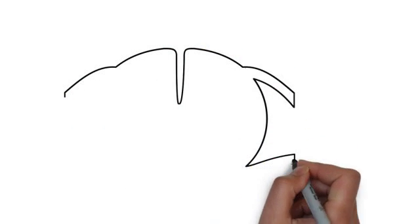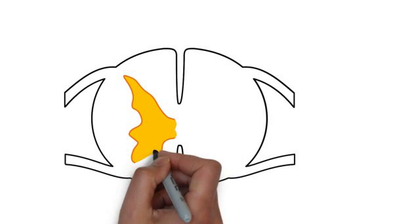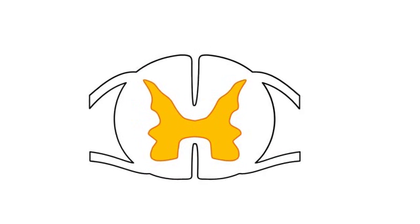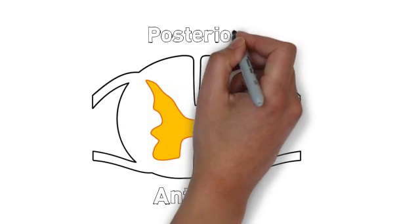I'll begin this review of the somatosensory system with the cross section of the spinal cord shown here, with the white matter in the outer portions and the gray matter colored gold in the center. Anterior is at the bottom of the diagram and posterior at the top.